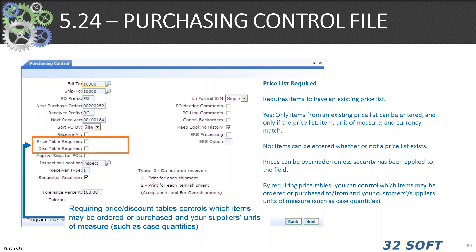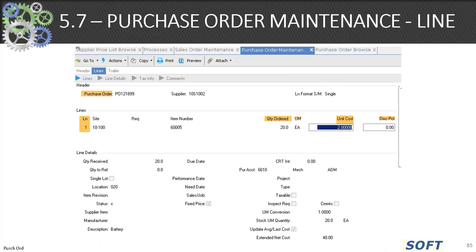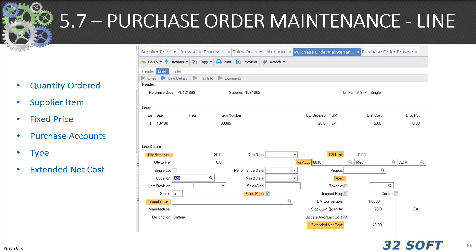If price lists are required, only items from existing prices can be entered. If no, you can order any item — these prices can be overridden unless security has been applied to a field. From the 5.7 PO create header, these elements impact supplier pricing: the order date, contract, price table, discount, line discount, taxable, fixed price, and credit terms. At the 5.7 PO line level we see quantity ordered — probably one of the more important values — the unit cost, and a discount percentage. From the line level to the line detail we find the quantity ordered, supplier item from 1.19, fixed price, purchase accounts, the type, and your extended net cost.